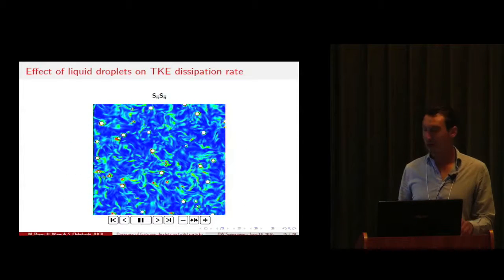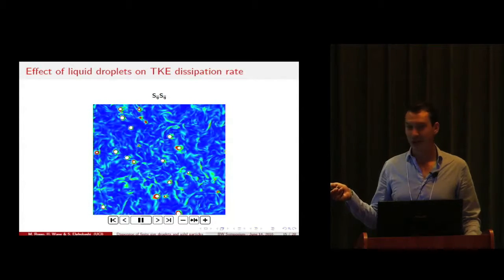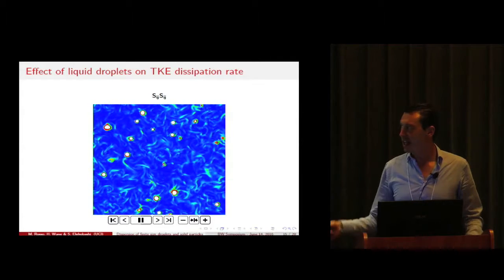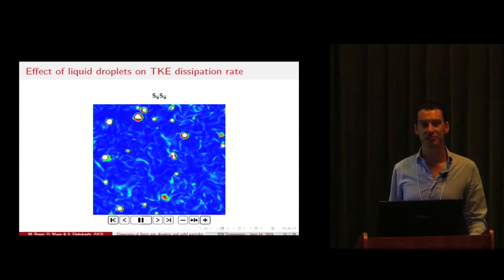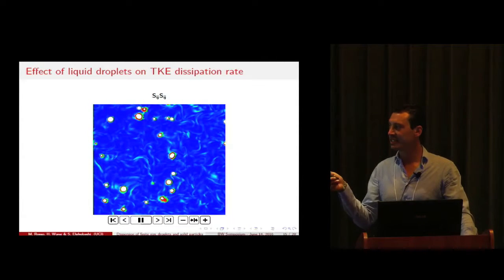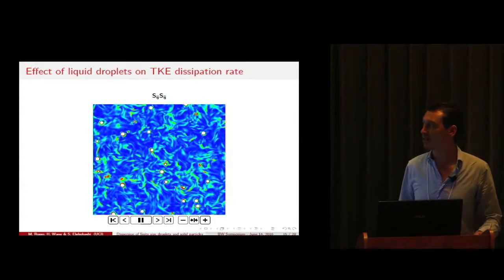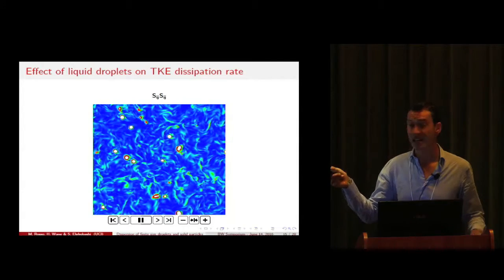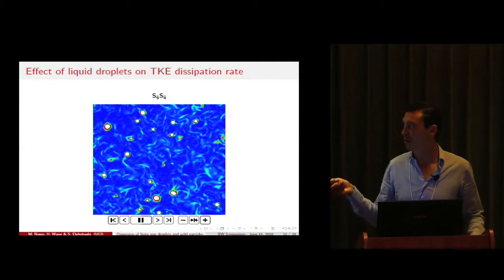In order to look into this matter, we look at this video which is a cross-section of the computational domain showing the TKE dissipation rate. As you can see, the maximum values of TKE dissipation rate are around the droplet, but compared to the case of the solid particles I showed you at the beginning, it's not confined only in front of the particle but everywhere around the droplet.